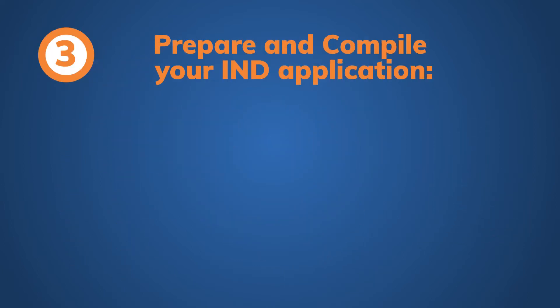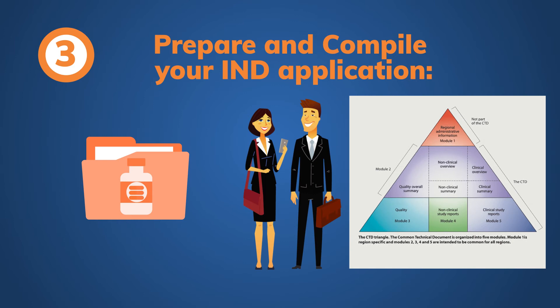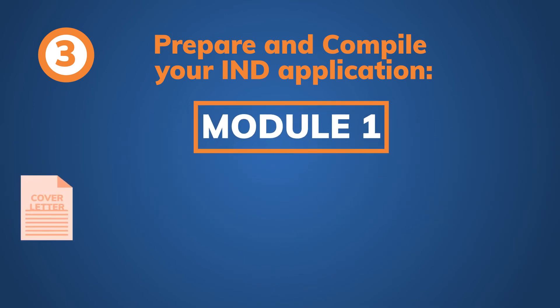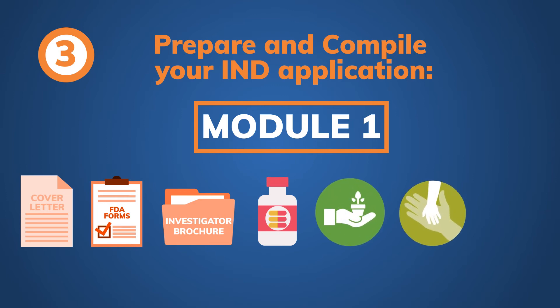Step 3: Prepare and compile your IND application. The GRP team will prepare the IND application according to eCTD format, which will include the following five modules. Module 1: Cover Letter, FDA Forms, Investigator Brochure, Products Labeling, Environmental Assessment, Paediatric Assessment, and Other Administrative Information as applicable.